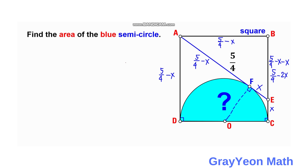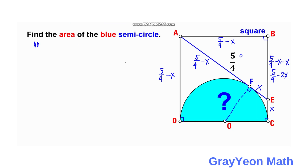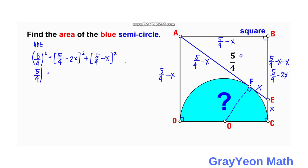If we focus on triangle ABE, it is a right triangle. Using the Pythagorean theorem on triangle ABE, we have AE² = BE² + AB², so: (5/4)² = (5/4 minus 2X)² + (5/4 minus X)².